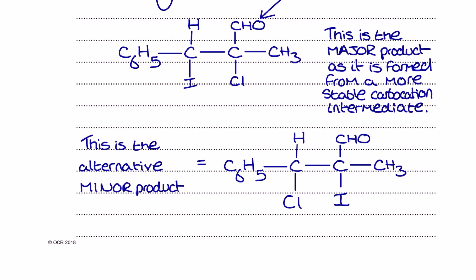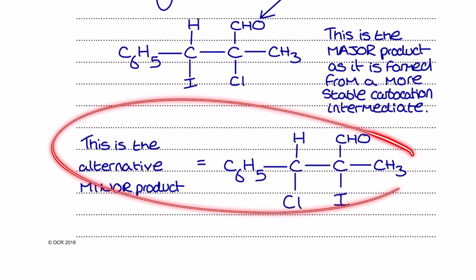What we don't want to say is this is the major product because it is more stable than this minor product. That is absolutely a massive misconception. We want to make it really clear that the major product is formed using a more stable carbocation intermediate than the minor product.